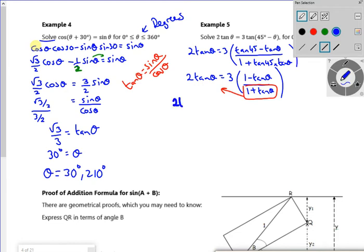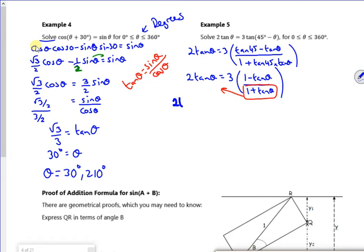I have 2 tan theta, I've got 2 tan theta multiplied by 1 plus tan theta equals 3 minus 3 tan theta.